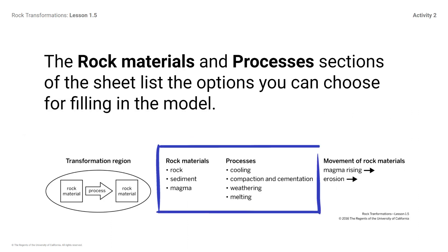The rock materials and processes sections of the sheet list the options you can choose for filling in the model. For now, ignore the section with options for movement of rock materials. We will return to this part of the modeling tool in a later session.